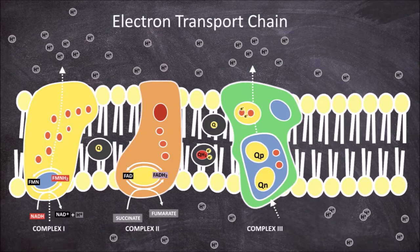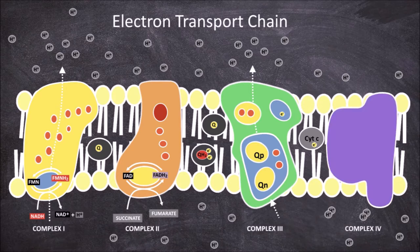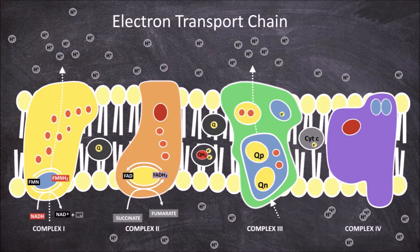Now we look at what happens to the electrons passed onto the iron-sulfur cluster center of the RISC protein. From the RISC protein, the electrons are transferred to cytochrome C1. From cytochrome C1, the electrons are transferred to the mobile electron carrier cytochrome C, which carries the electrons to complex 4. Complex 4, also known as cytochrome C oxidase, consists of a double copper center, a heme A site, and a copper plus heme A3 site.